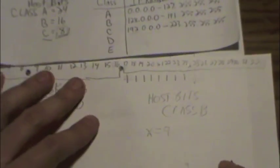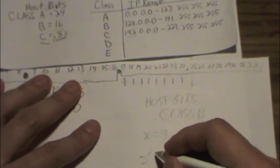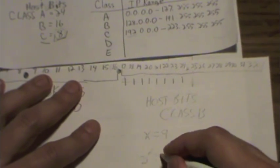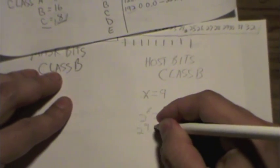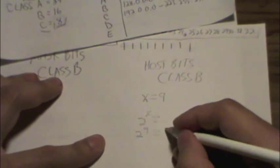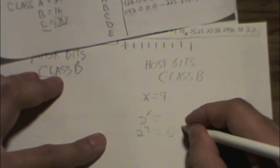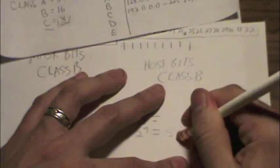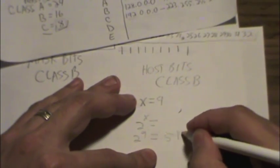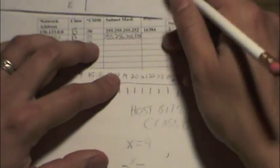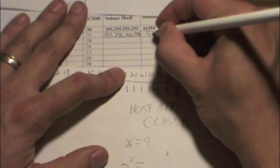And in order to get the number of subnets, we do 2 to the x. So that's 2 to the 9th, which gives us 512. Looks like there was a little number written there before. 512. So then we can fill in our little chart here. The number of subnets is 512.